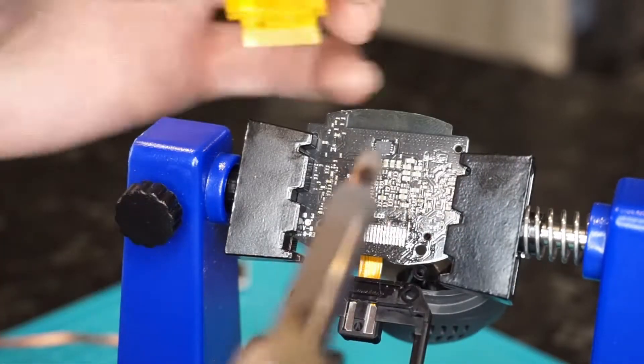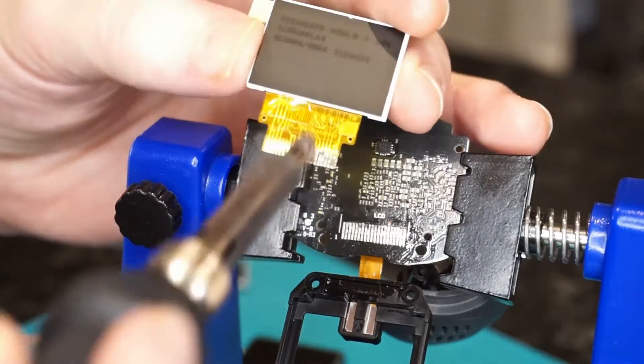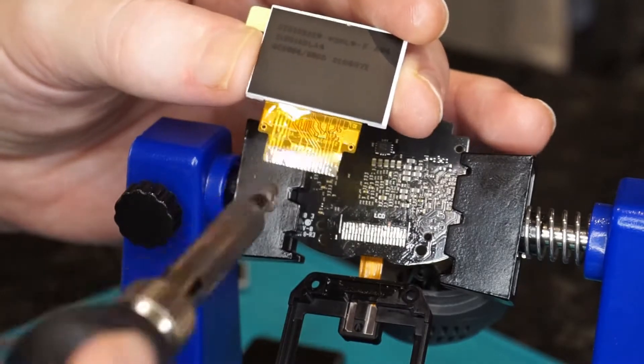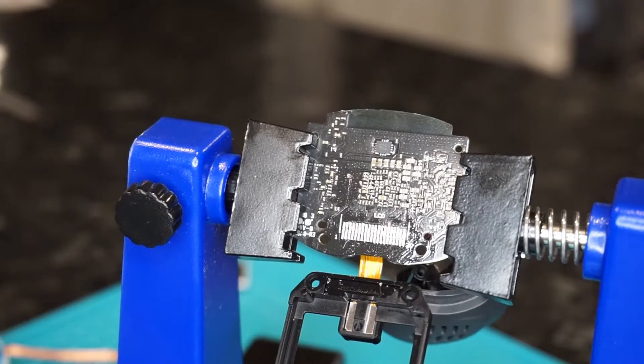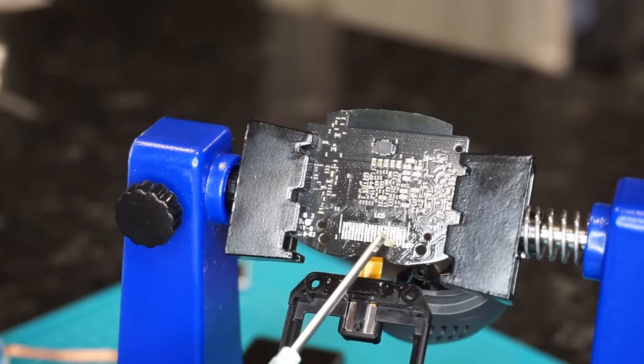So once you've got that nice and clean, just a case of taking the replacement screen here that I've got. Tiny bit of solder on the end of the iron and just wet the connectors on the end of that ribbon cable for the new screen. And again, tiny, tiny amounts here. This is probably, this might not show you just how small this workspace is because I've got the camera zoomed in as far as it can go.